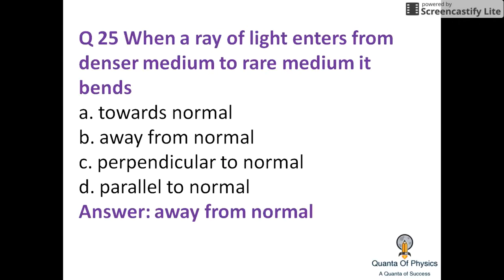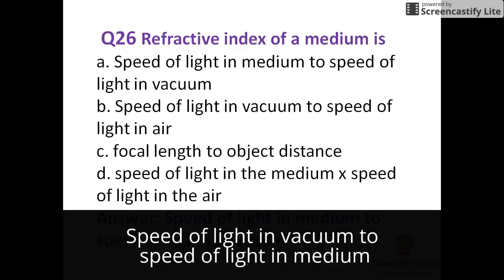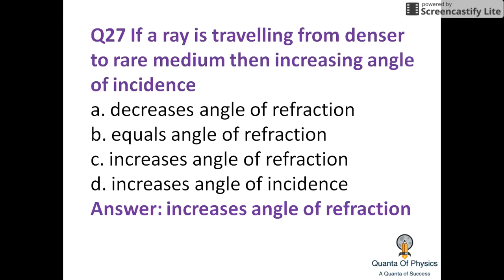Focal length is positive for a converging lens. When a ray of light enters from a denser medium to a rarer medium, it bends away from the normal. The refractive index of a medium is the speed of light in vacuum divided by the speed in the medium.